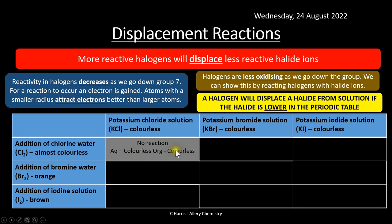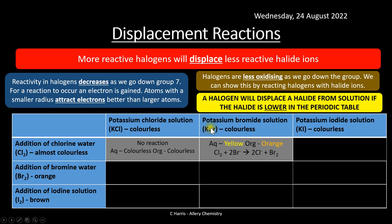When chlorine reacts with potassium bromide, a displacement reaction occurs because chlorine is higher up in the periodic table and more reactive than bromine. The aqueous layer turns yellow and the organic layer turns orange. Chlorine reacts with bromide ions to form Cl⁻ and Br₂ — bromine is oxidized (−1 to 0) and chlorine is reduced (0 to −1). This is a redox reaction.